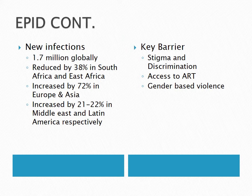Gender-based violence, especially rape of women, is another factor that influences HIV spread. Many of those who are raped end up becoming HIV-infected. People who commit rape are often associated with drug use, and HIV infection rates are very high among individuals using hard drugs.